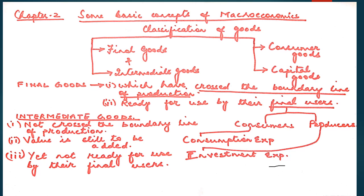Examples of final goods include bread, scooter, a TV set, and a car. Intermediate goods are those goods which have not crossed the boundary line of production, meaning value is yet to be added. They are not ready for use by the final users.